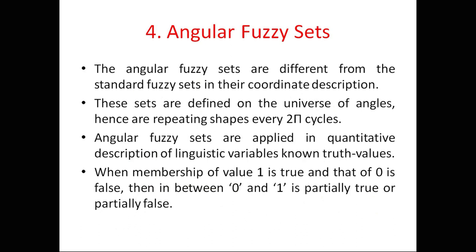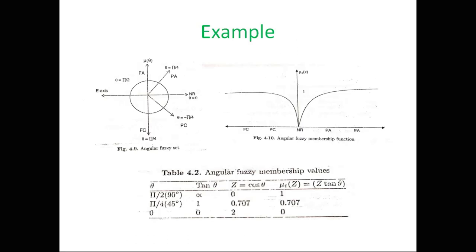Angular fuzzy sets differ from standard fuzzy sets in their coordinate description. These sets are defined on the universe of angles and repeat every 2π cycles. Angular fuzzy sets are applied in the quantitative description of linguistic variables based on non-truth values — when membership is 1 it is true, 0 is false, and values in between are partially true and partially false.